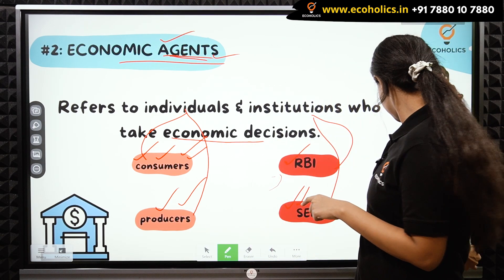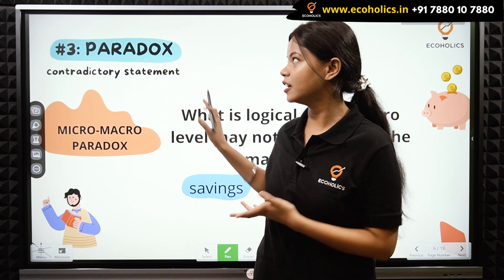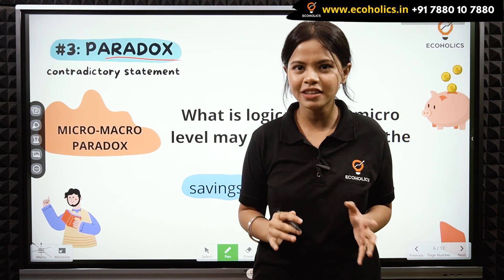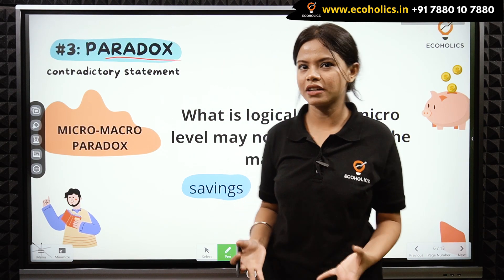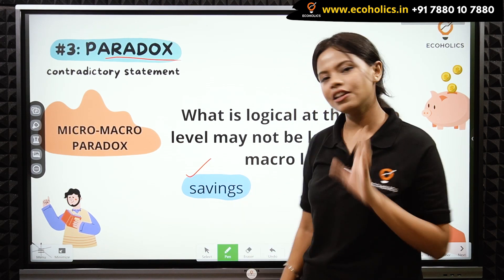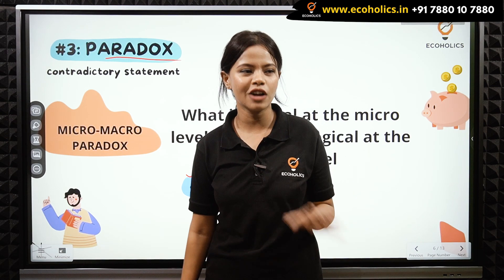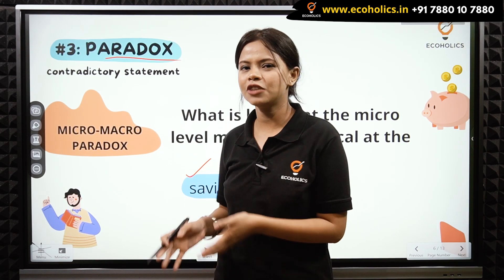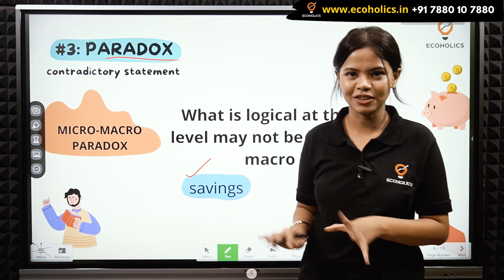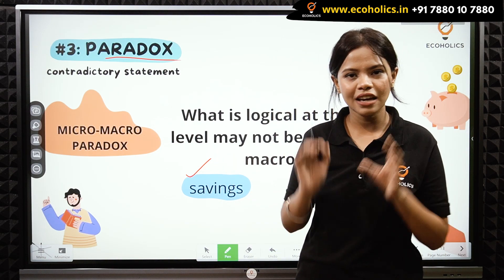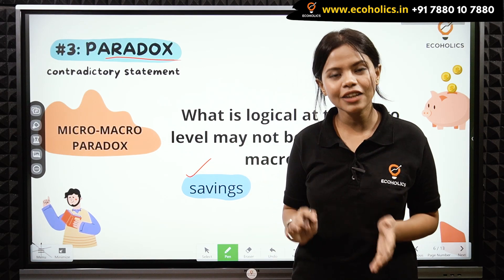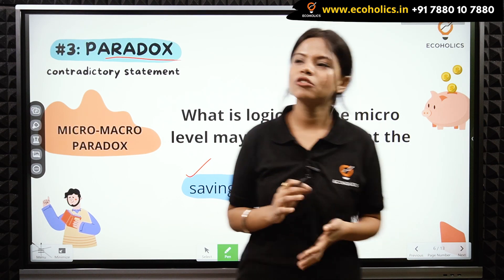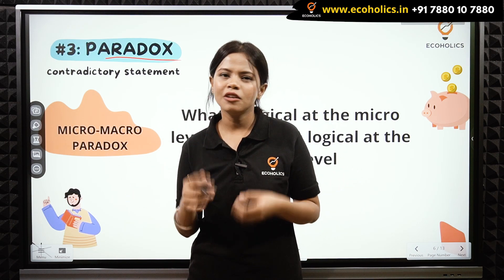Our next topic is 'paradox.' Paradox is basically a statement which can have two or more logical outcomes. For example, savings at an individual level is great — we have always heard at home to save some amount of money. Savings is good at the micro level, but if we talk about the macro level, it is not that great and has some drawbacks.